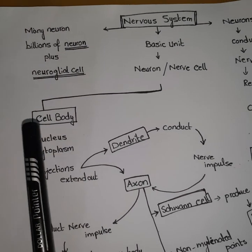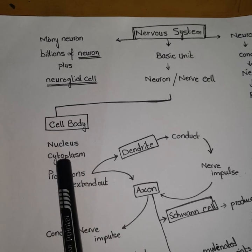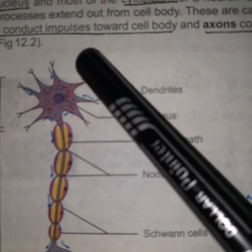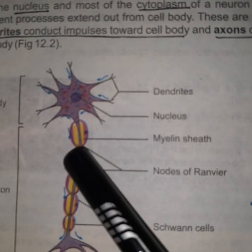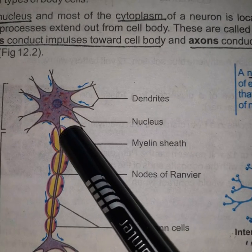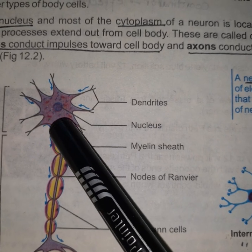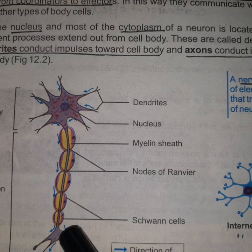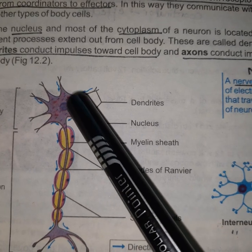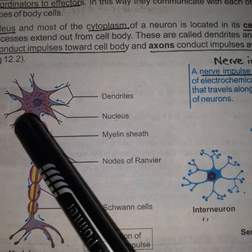The first thing we are going to discuss is the cell body. The cell body consists of the nucleus and the cytoplasm. As you can observe in the diagram, this part of the neuron is the cell body. The cytoplasm surrounds the nucleus, and the cell body also consists of some projections that we call dendrites, and the elongated projection we call the axon.